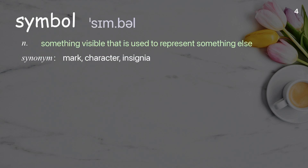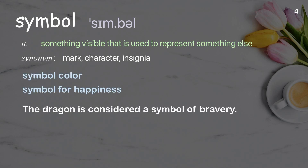Symbol: something visible that is used to represent something else. Examples: symbol color, symbol for happiness. The dragon is considered a symbol of bravery.